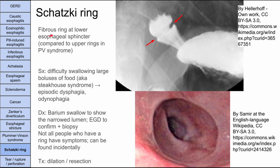Schatzky's ring is a fibrous ring at the lower esophageal sphincter, in contrast to the upper rings in Plummer-Vinson syndrome. It can be diagnosed with a barium swallow showing a narrowed lumen, confirmed with EGD and biopsy. Symptoms include difficulty swallowing large boluses of food — sometimes called steakhouse syndrome, where a big piece of steak can't be swallowed and gets regurgitated. Not everyone with rings is symptomatic; it can be found incidentally. If symptomatic, treatment is dilation and resection.